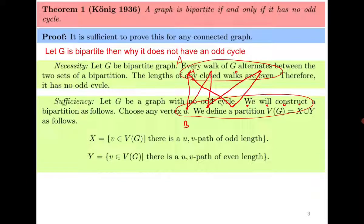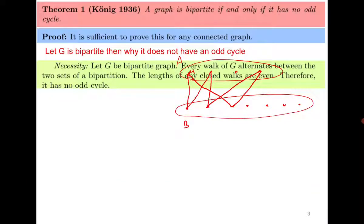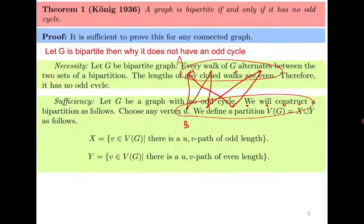For the other direction, we must prove that if the graph has no odd cycles then it is bipartite — meaning it can be partitioned into two sets X and Y with the bipartiteness property. Fix a vertex u and define two sets: X contains all vertices v such that the length of the u-to-v path is odd, and Y contains all vertices where the path length is even. Since the graph is connected, every vertex goes to either X or Y based on the parity of the path length.